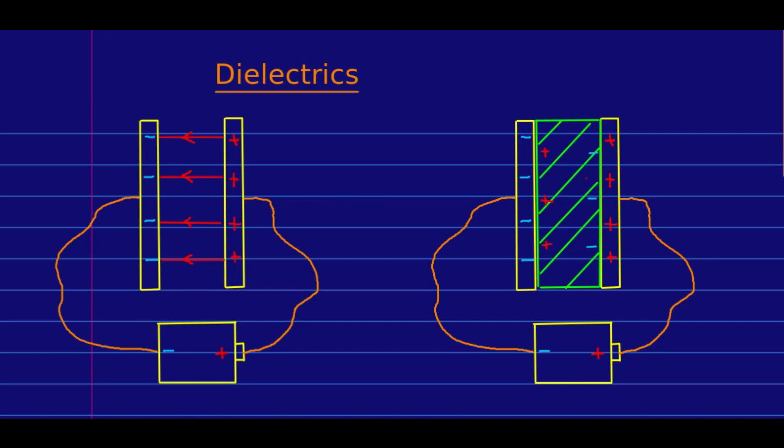Now, inside it, there are two fields. There's the field due to the plates. And there's a field pointing the other way due to the polarization of this insulator. However, the total field has to be the same as it was before we put this insulator in here, because we haven't changed the plate separation, and we haven't changed the potential difference because the plates are connected to a battery. And so the total E field can't have changed.